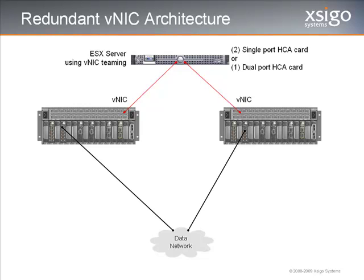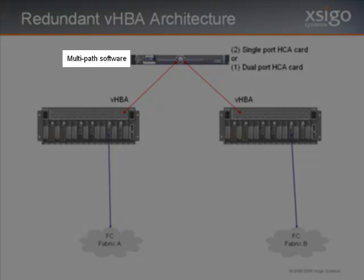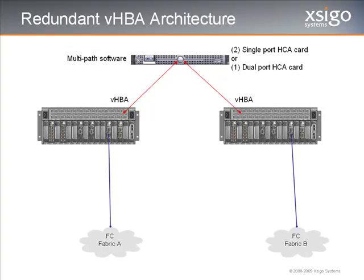Basically, the difference between these first two configurations is where the intelligence lies to handle the failover. In the first case, the H-AVNIC, the SEGO-IO director manages the failover. In the second case, the redundant VNICs, the ESX host manages the failover. The last configuration to review is the redundant VHBA architecture. In this case, the SEGO-IO directors only present paths to the hosts in the form of VHBAs. The host then uses a multipath driver to manage those paths. Multipath drivers and their associated capabilities will vary by host operating system. We also assume that the fiber channel switches and storage arrays are configured to support the paths from the host to the relevant LUNs.